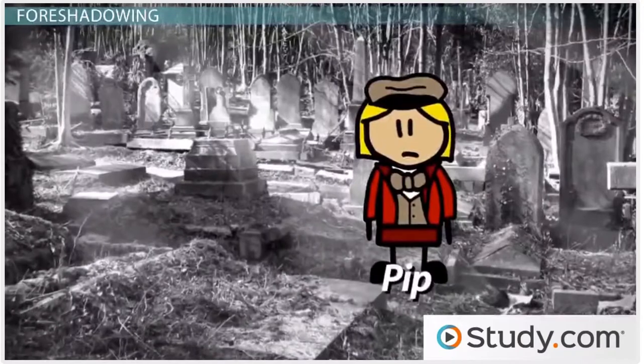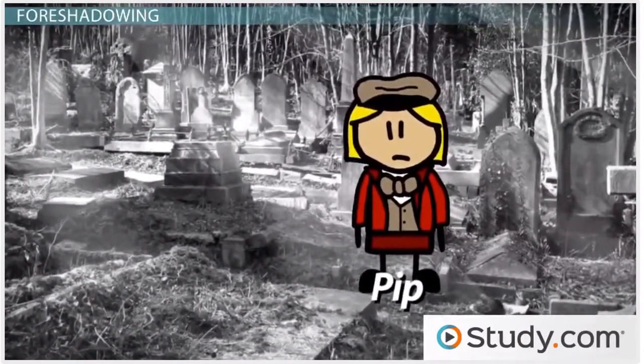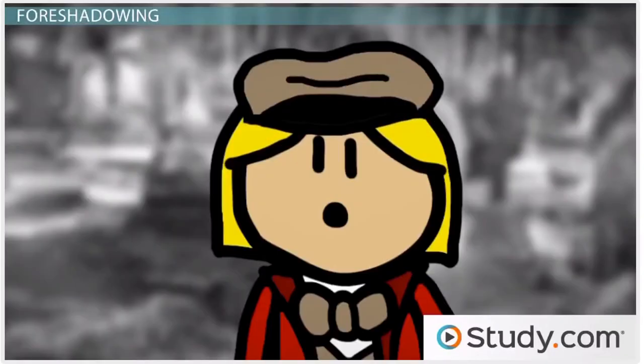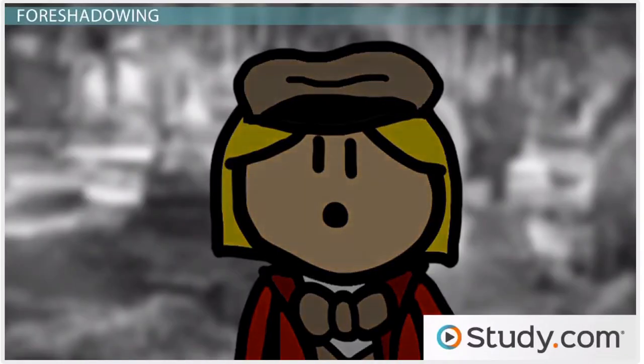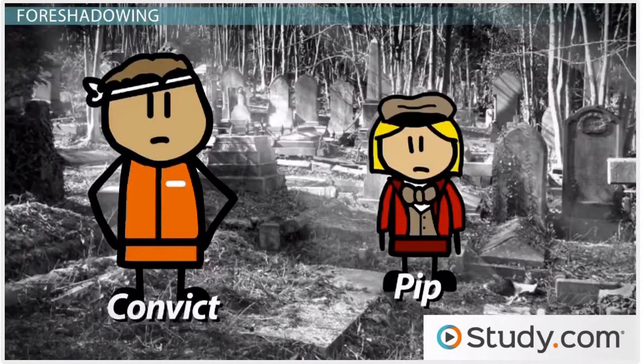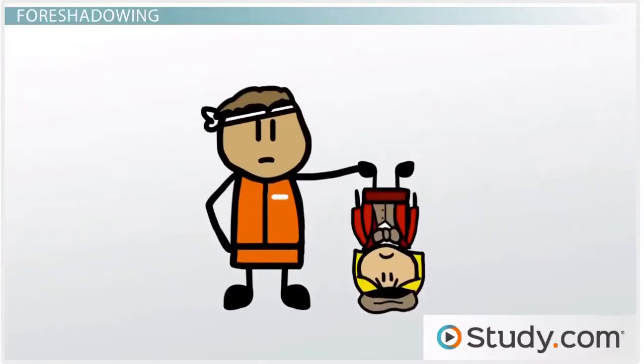At the very beginning of the novel, Pip visits his parents' graves in the dark marshes near where he lives with his brother and his brother's wife. Suddenly, he is confronted by an escaped convict. Pip is obviously terrified, especially when the convict takes hold of him. The man, after looking at me for a moment, turned me upside down and emptied my pockets. There was nothing in them but a piece of bread.